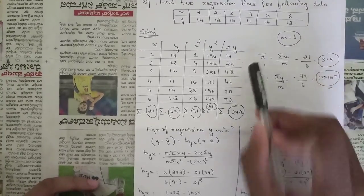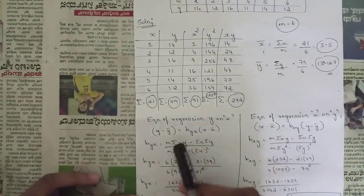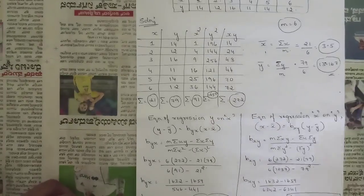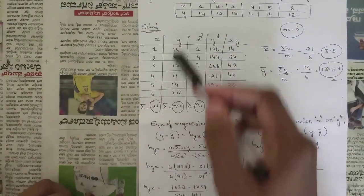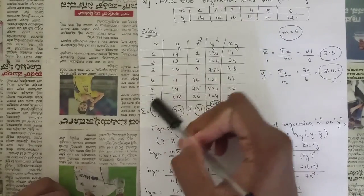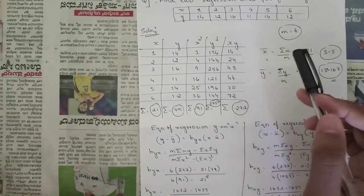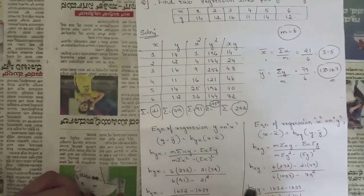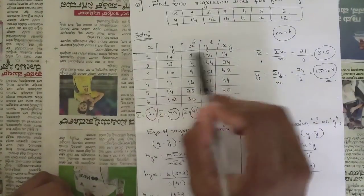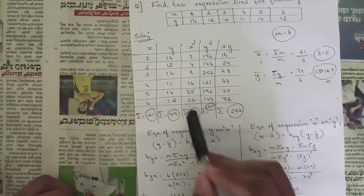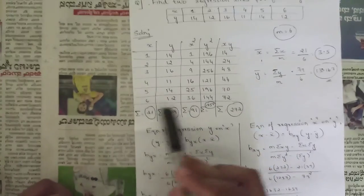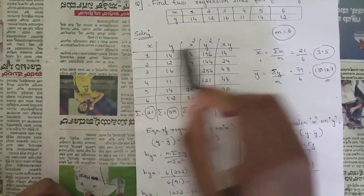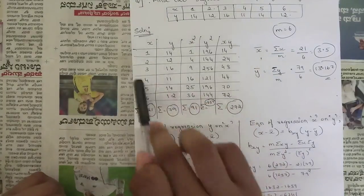We also need x̄ and ȳ since the regression line equations contain these terms. Write the tabular column with x and y values and take their summations — summation of x is needed for x̄ and summation of y for ȳ. We get: summation of x = 21, summation of y = 79, summation of x² = 91, summation of y² = 1057, and summation of xy = 272.